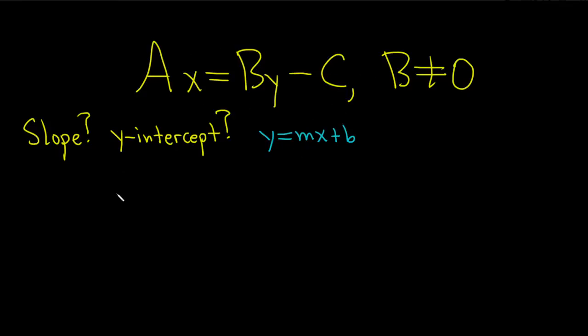I'm going to start by writing this down again over here. So this is AX equals BY minus C. We want to isolate the term with the Y. Let's add C to both sides. So we get AX plus C equals BY.